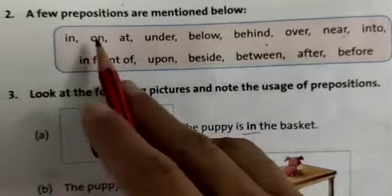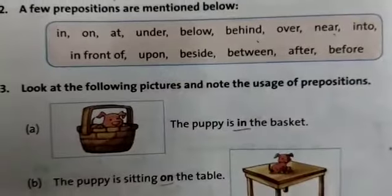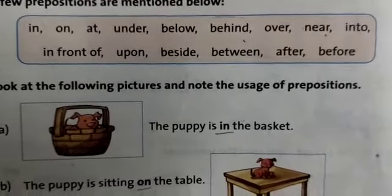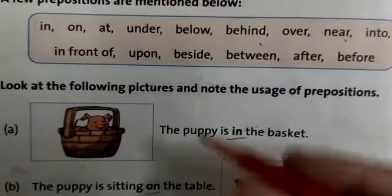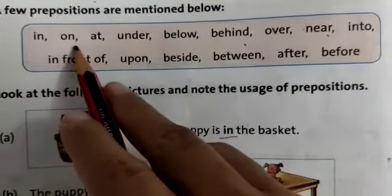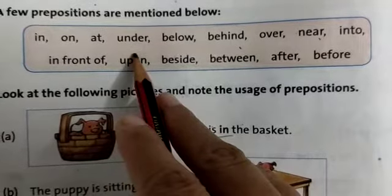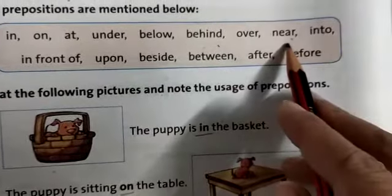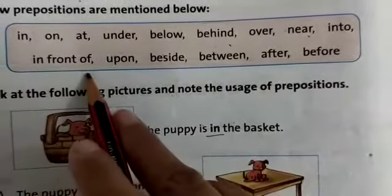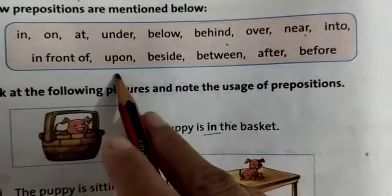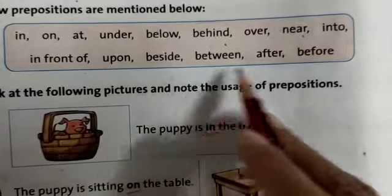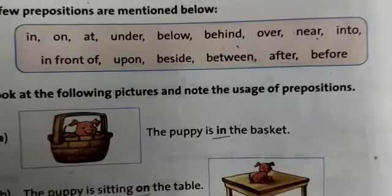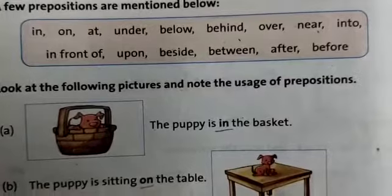A few prepositions are mentioned below. These are the words: in, on, at, under, below, behind, over, near, into, in front of, upon, beside, between, after, before. All these are preposition words which we use in sentences.